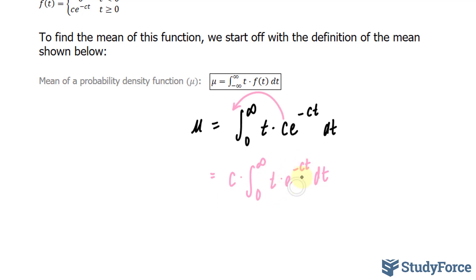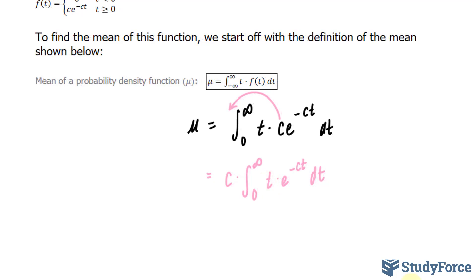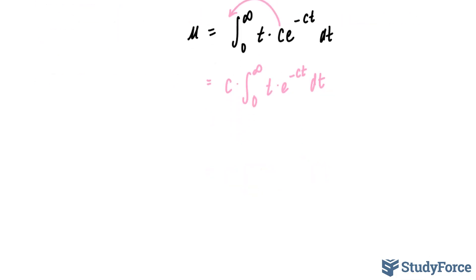To take the integral of this expression, we'll use integration by parts. We need to set one of these factors as u and the other as dv dt. We choose u to be t, and dv will be e to the power of negative c t dt.